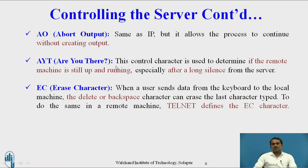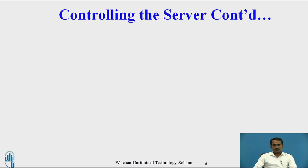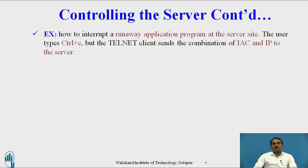EC (Erase Character): when a user sends data from the keyboard locally, they can use Delete or Backspace. To do the same on a remote machine, Telnet defines EC as the command to erase the last character. EL (Erase Line): used to erase the current line on the remote host. IAC (Interpret As Control) is also used to modify or interrupt programs on a remote machine.